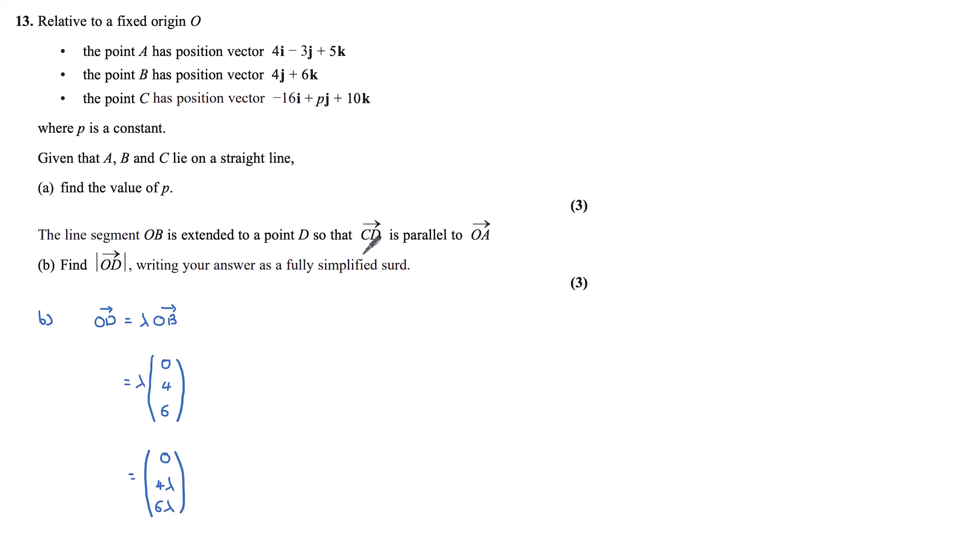I also know that CD is parallel to OA. So let's find our vector CD. CD is equal to OD minus OC. OD we have just found to be (0, 4λ, 6λ). And OC, we have our -16, p we now know to be 32, and 10. This gives us a value for CD of (16, 4λ-32, 6λ-10).